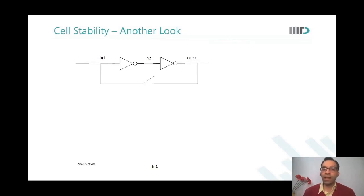A more visual kind of a look. So let us say there are these two inverters, a pair of inverters. This node is called in1, in2, and out2.